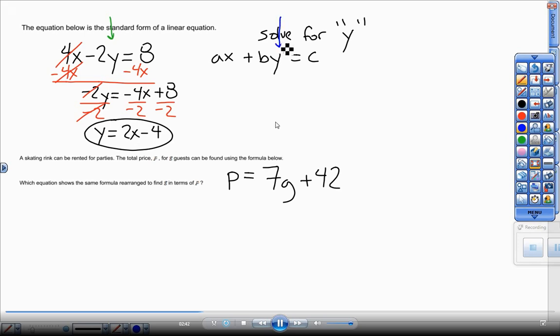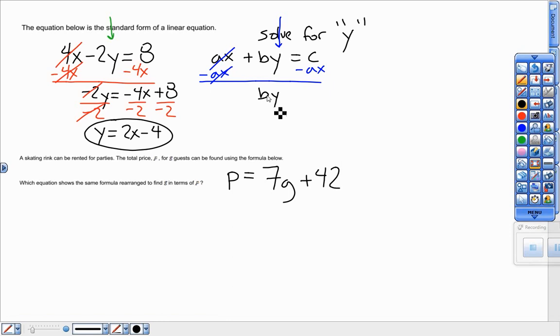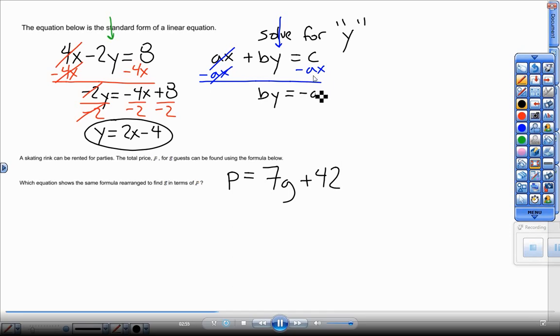This one's solving for Y. Take away AX on both sides, minus AX. Bring down the BY. Get in the habit of writing this minus AX plus C form. Opposite timesing by B, dividing everything by B. So these Y's cancel away and give me negative AX over B plus C over B.